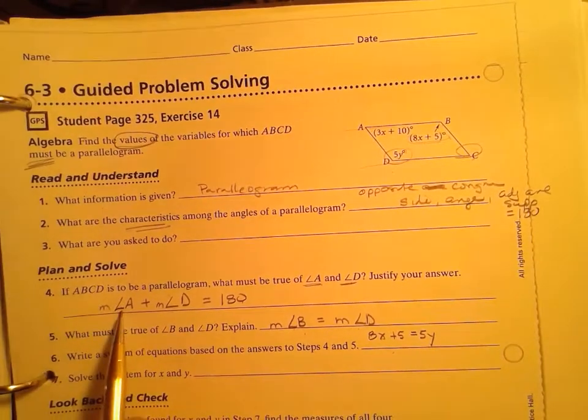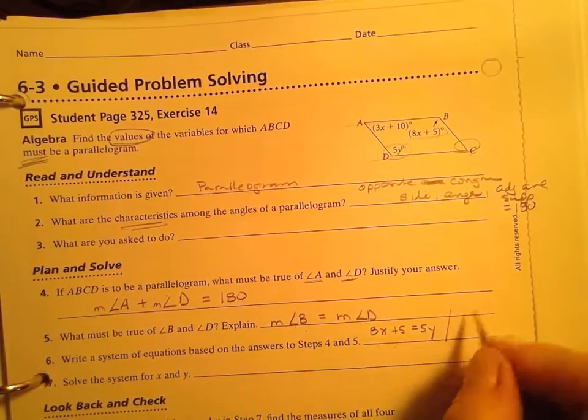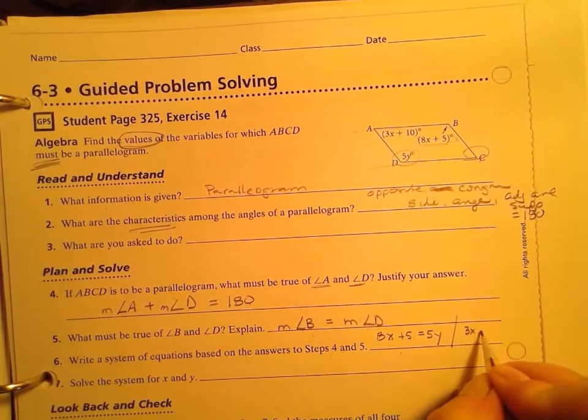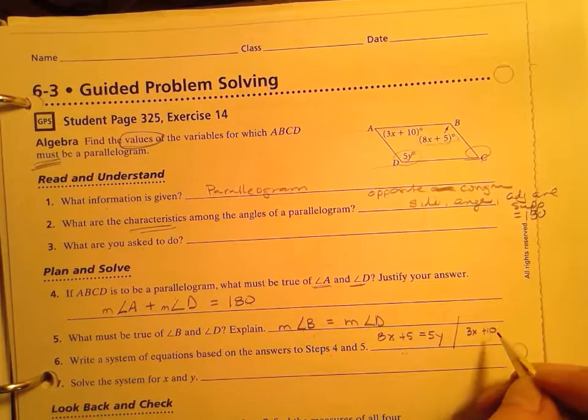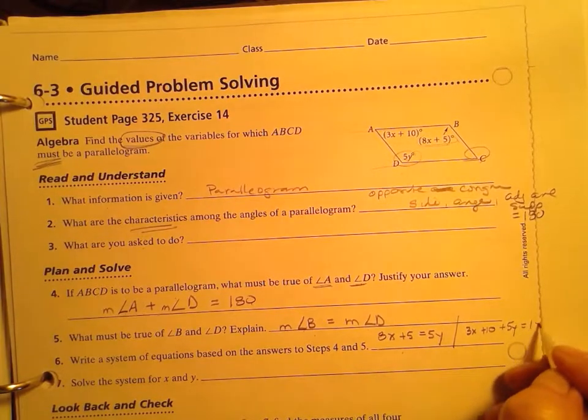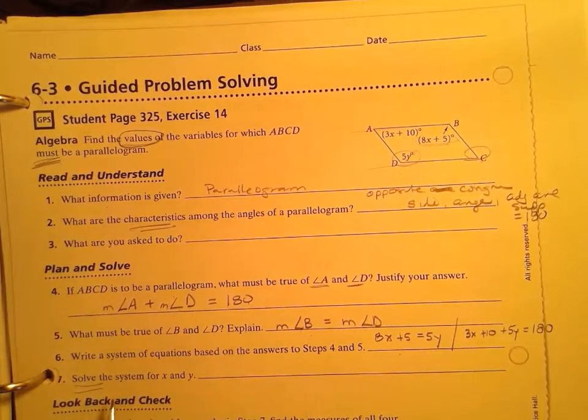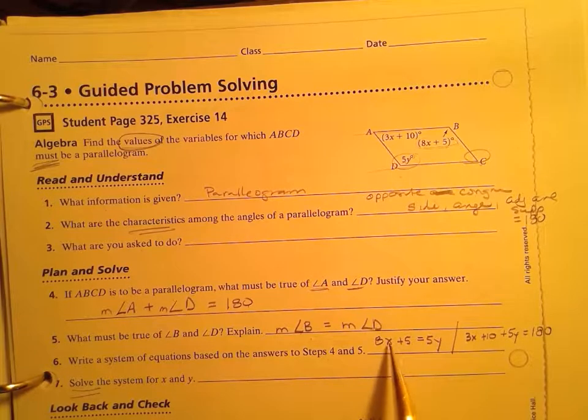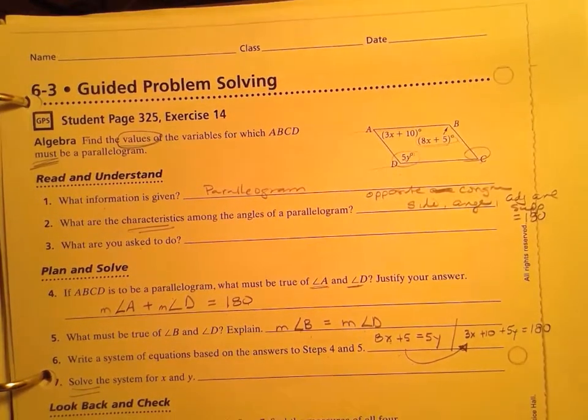And if A plus D equals 180, that means that we have another equation that A plus D, 3x plus 10 plus 5y equals 180. And solve for that. What we're going to need to do to solve for it is to solve one equation for one of the variables and then substitute it into the other. And I will leave that for you to do.